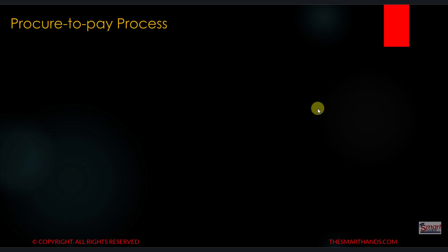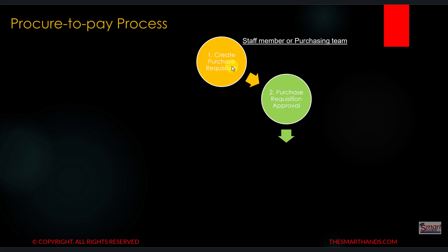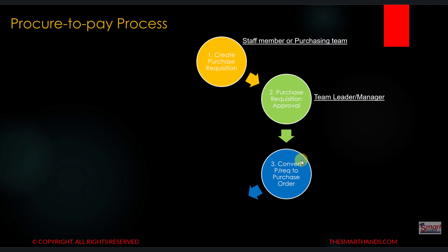The procure-to-pay process starts with creating a purchase requisition. A requisition is created in the system and this can be done by any staff member of the company, or in some businesses it can be done only by the purchasing department. Step number two is to approve this purchase requisition, which is done by the team leader of the requisitioner or the line manager.